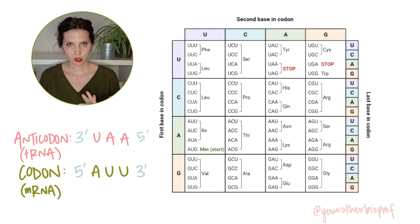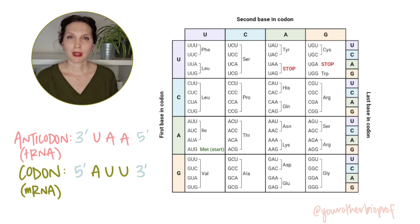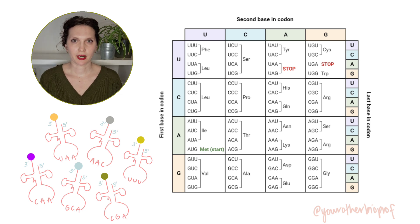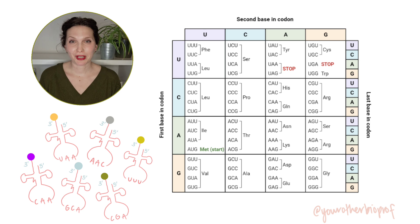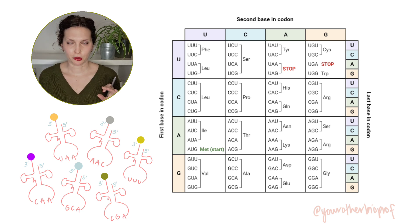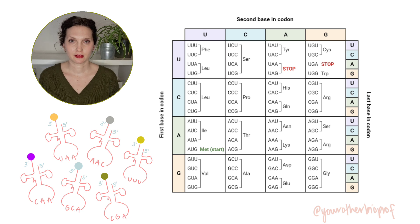If we needed tRNAs with anticodons complementary to each of the different amino acid-specifying codons, how many different tRNA types would we need? 61, right — there are 61 codons that encode an amino acid, meaning 61 different anticodons, so 61 different types of tRNAs. But we don't make that many. For most organisms it's somewhere between 40 and 50 different types of tRNAs. For human mitochondria it's only 22. So we are not making tRNAs with anticodons complementary to every single one of those codons, yet we're making proteins just fine — so how are we getting away with this?